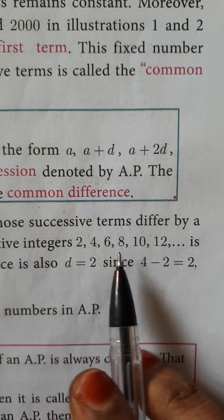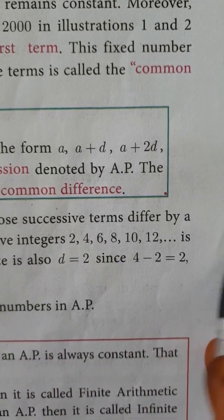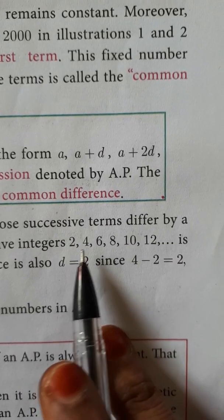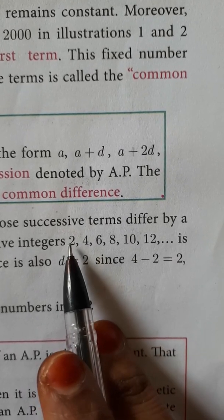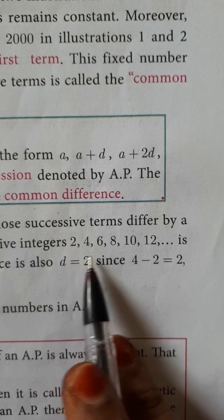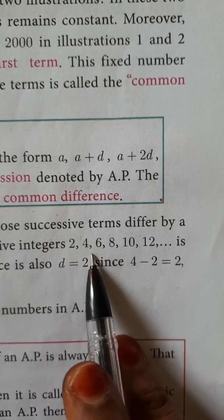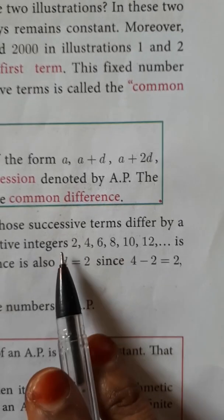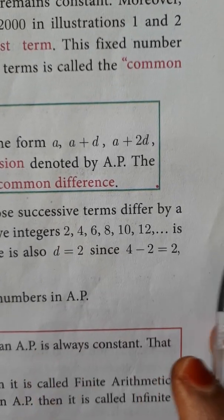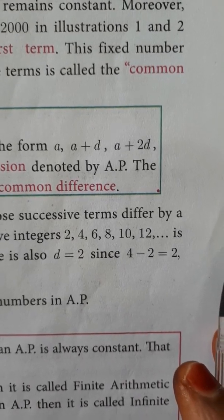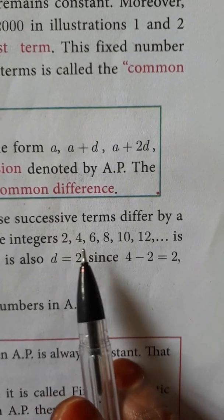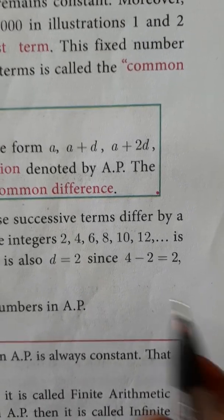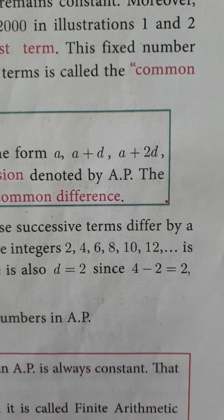One example is 2, 4, 6, 8, 10, 12. This is a sequence. The common difference is found by subtracting the first term from the second term: 4 minus 2 equals 2. Throughout the sequence, the difference is constant, so this sequence is an arithmetic progression.